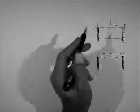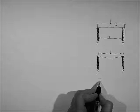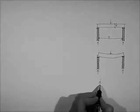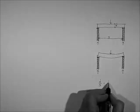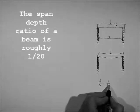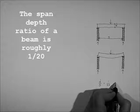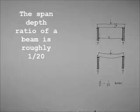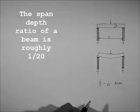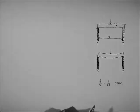We're talking about a beam here and the span-depth ratio of a beam is roughly 1 over 20. This is for any type of beam material and common loadings that you will come across in building design.